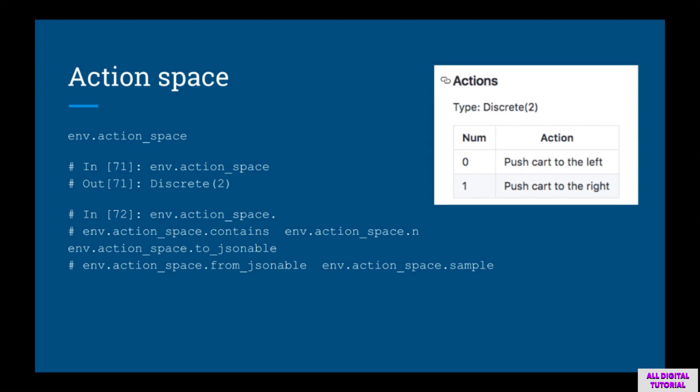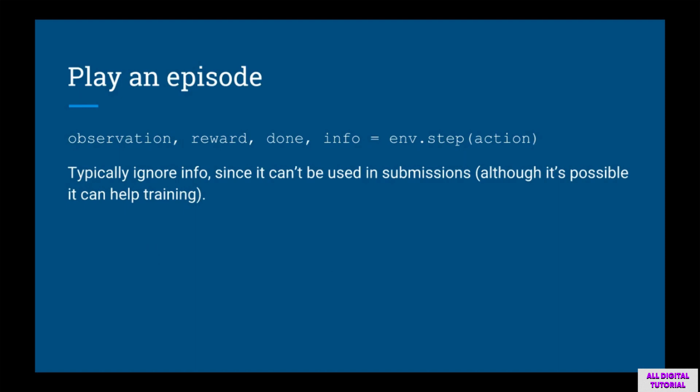Actions are always numbered from zero and up, just like how we treat classes in supervised learning. We are finally ready to start playing an episode. The function env.step takes in one parameter — the action — and returns four values: the observation, the reward, a done flag, and an info dictionary. We usually ignore the info dictionary since it's for debugging.